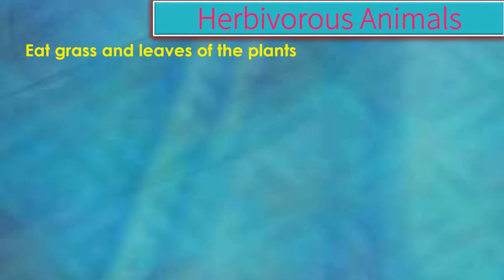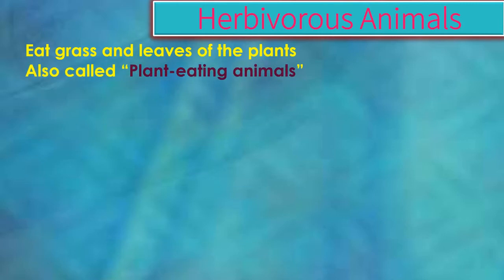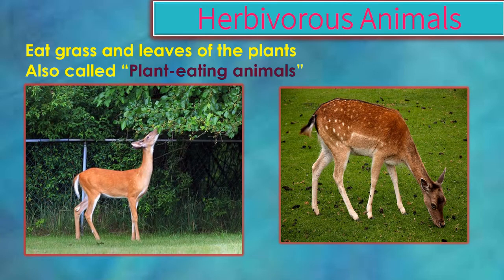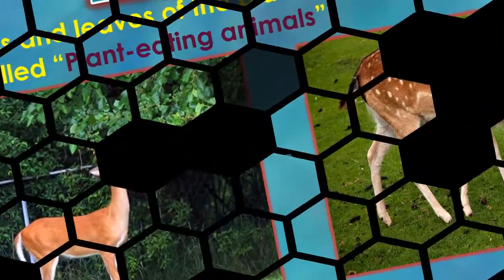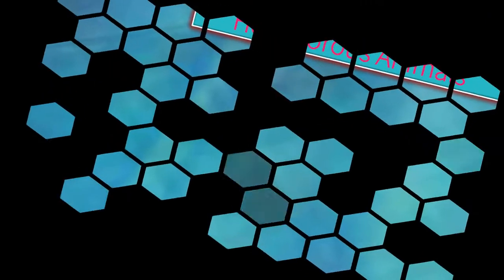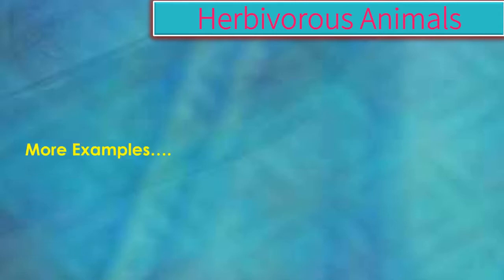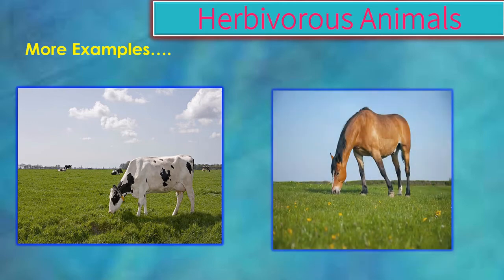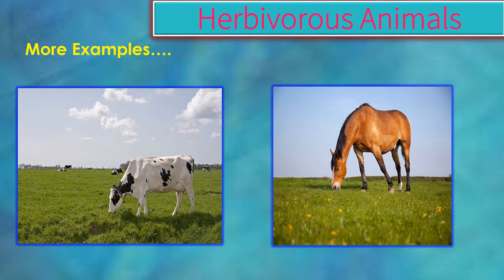Let us see about herbivorous animals. They eat grass and leaves of the plant. They are also called plant-eating animals. For example, deer. Some more examples of herbivorous animals are cow and horse, as they eat grass.